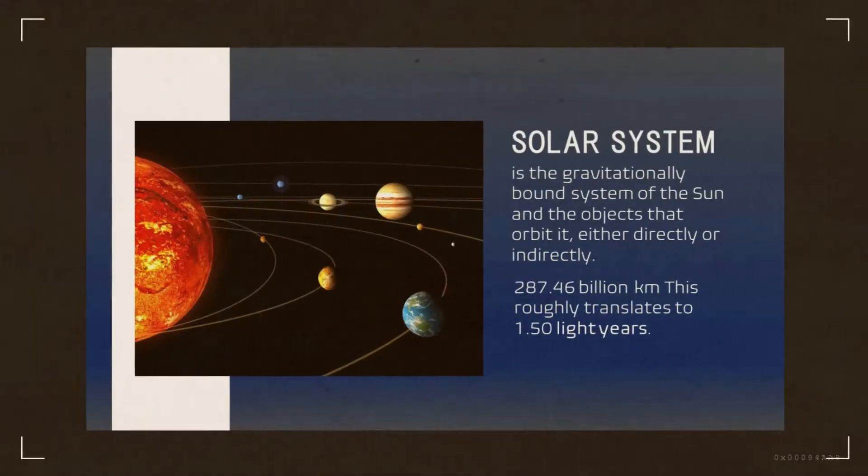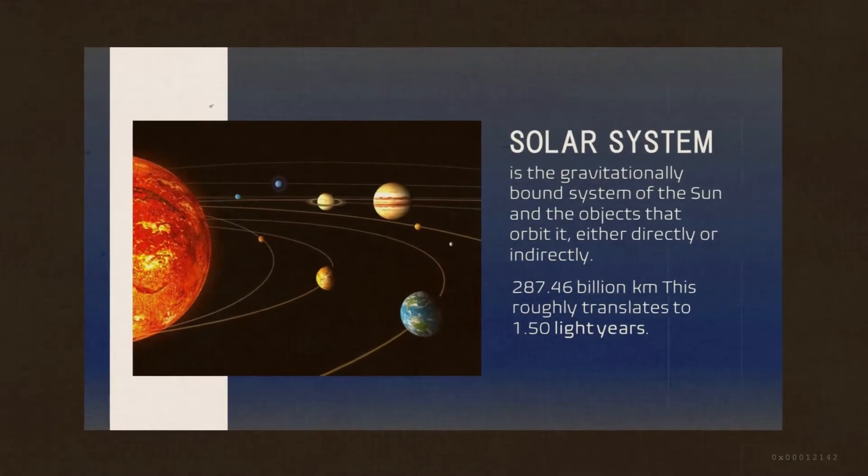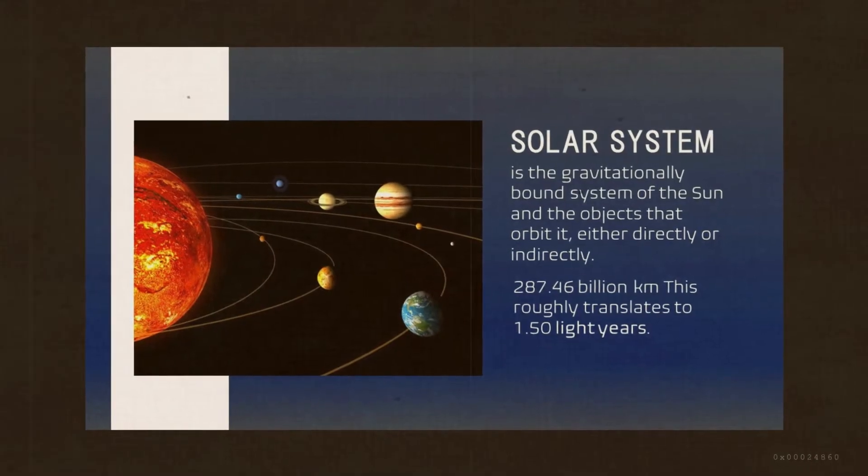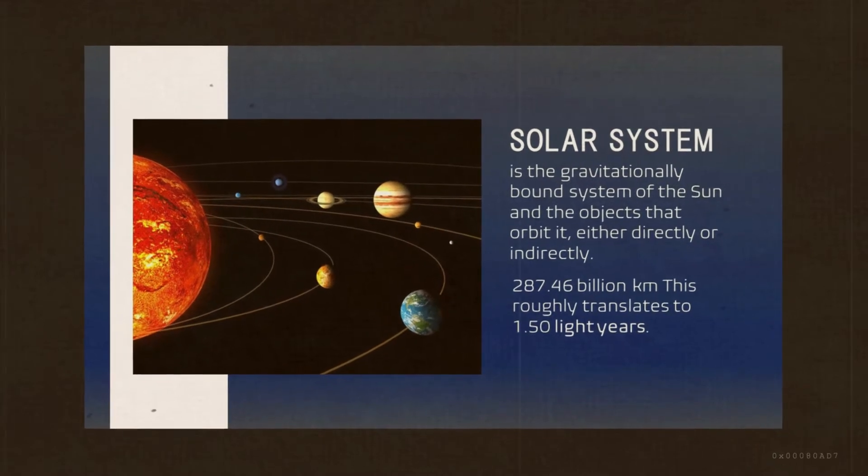Our solar system is one of more than 500 solar systems in our Milky Way galaxy. It has an approximate size of 187.46 billion kilometers. This is roughly translated into 1.5 light years.